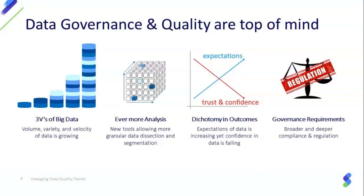These aspects around governance and data quality really become top of mind. As we look at some of these greater challenges, the classic three Vs of big data — volume, variety, velocity — continue to grow and accelerate. We see ever more analysis, and we're constantly looking at the ways that data science is exploring information, trying to drive new insights with tools that allow more and more dissection of data and segmentation of information.